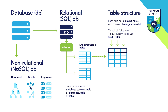When creating a table, you will select a data type for each column, as all values in a single column must be homogeneous. For example, we have text in the name column, numbers in the age column, and true/false in the membership column.